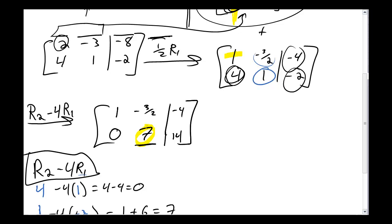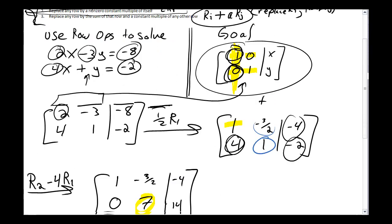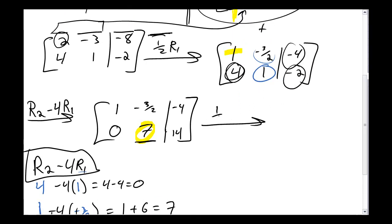Next, I look at what I'm after. One of the things I'd like is I'd like a 1 to be here. With my row operations possible, one of the things I can do is replace it. I'm going to replace any row with a constant multiple of itself. If I take 1 7th times row 2, it's going to get me something good. Again, the top row is not going to change: 1, negative 3 halves, and negative 4. No reason to do anything there. But I take 1 7th times 0 and that gives me 0. I take 1 7th times 7 and that gives me 1. And I take 1 7th times 14 and that gives me 2.